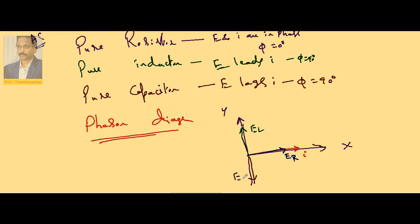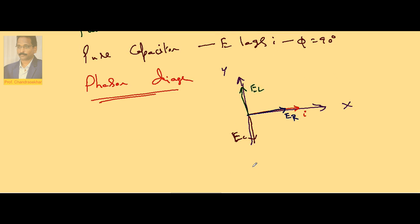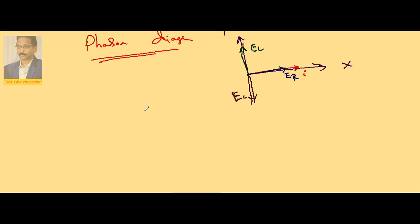For the capacitor, E lags I, so E_C is shown along the negative y-direction. The phasor diagram clearly shows: in a resistor, EMF and current are in phase; in a pure inductor, EMF leads current; in a pure capacitor, EMF lags current. Since E_L and E_C are in opposite directions, we consider their resultant.